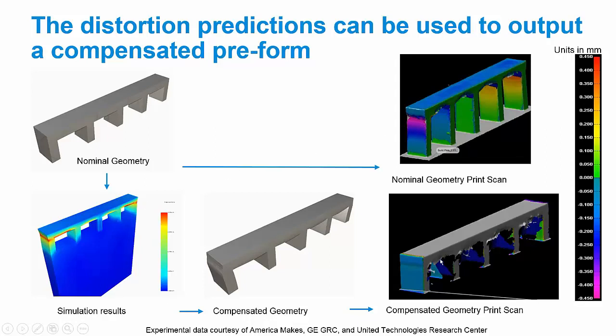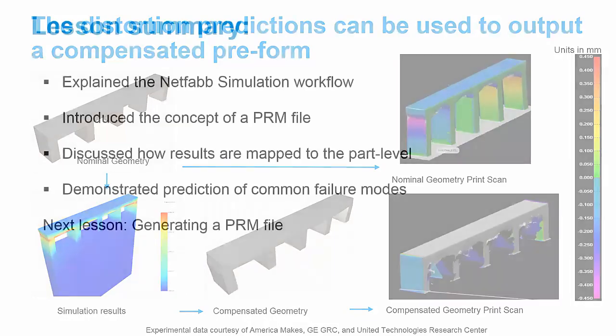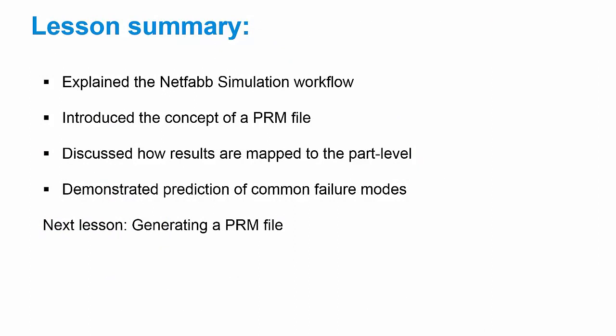That's what I wanted to cover in the first lesson. In upcoming lessons, we'll get into actually using the software. What we covered today was the Netfab Simulation workflow, the concept of a PRM file, and how results are mapped from the PRM scale onto the part-level scale to get fast and accurate results. We also demonstrated Netfab Simulation's predictions of common failure modes in additive manufacturing brought on by distortion and stress. In the next lesson, I'll cover how to generate your own PRM files so we can get on to running our own simulations.